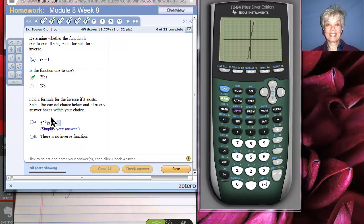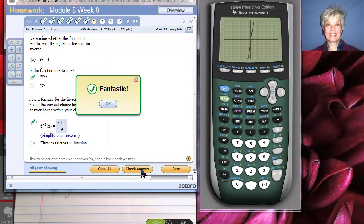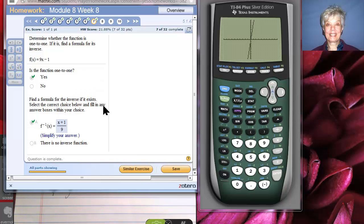So we're going to write it here. It's going to be a fraction. I'll have x plus 1 on top and 9 on the bottom. And I did it right. Let's move on.